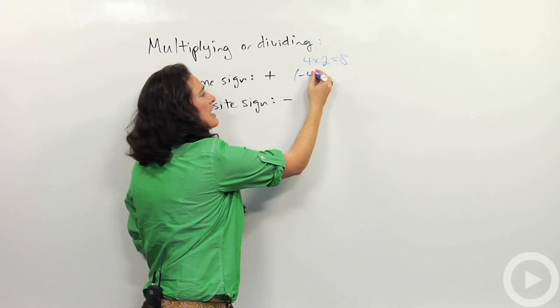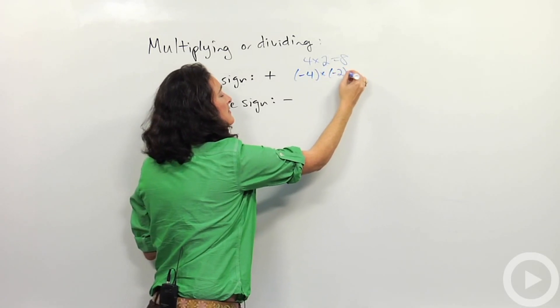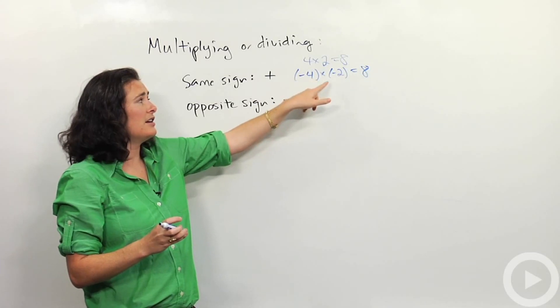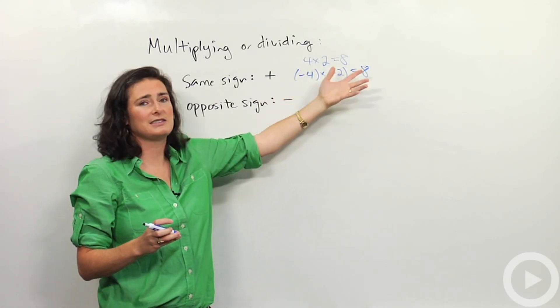Same idea if I do negative 4 times negative 2, still positive 8. They're the same sign. Negative and negative gives me a positive answer.